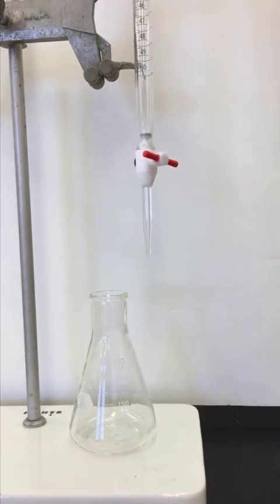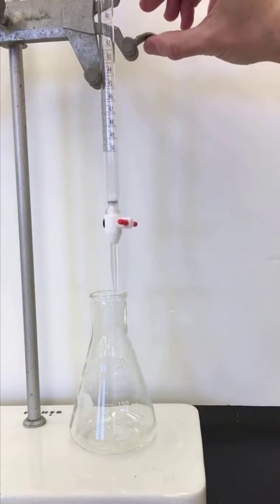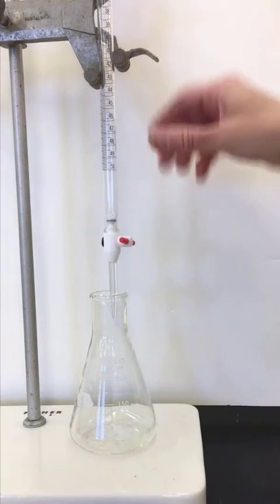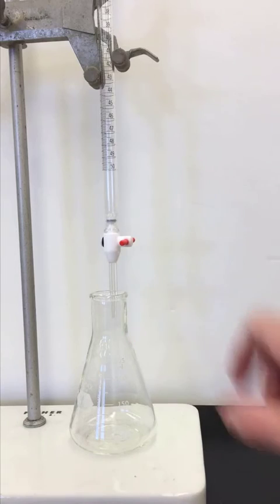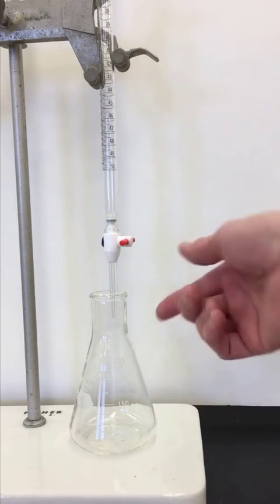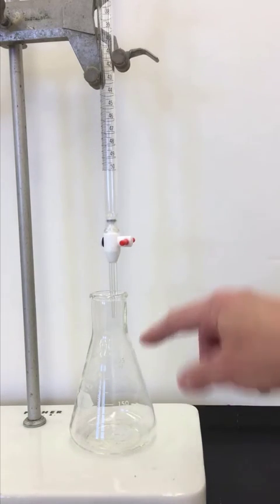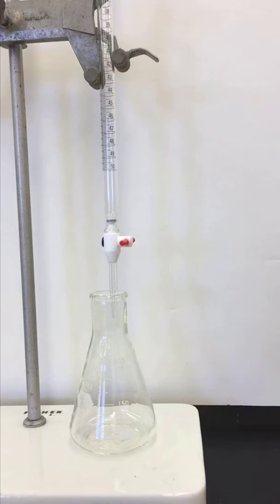We're going to put it in our burette clamp, but this is how our setup would be. We would put the tip of the burette into our Erlenmeyer flask so every drop that comes out of the burette goes directly into the Erlenmeyer flask and we don't lose a drop.